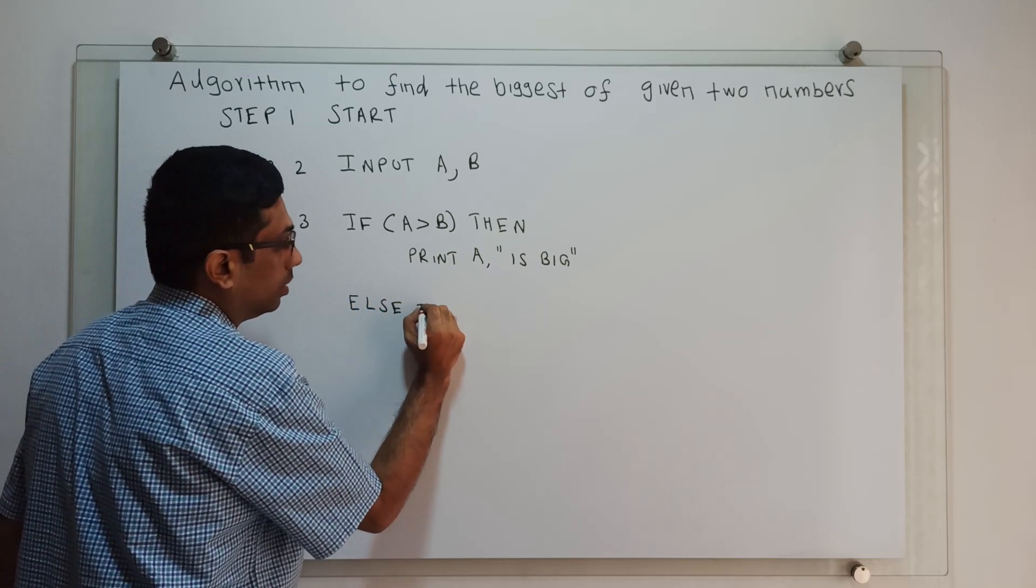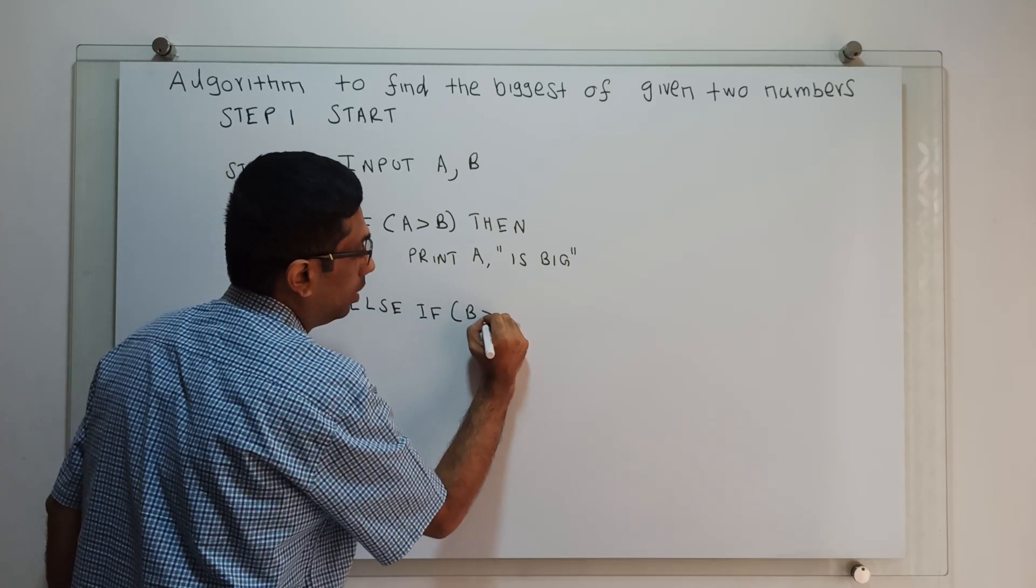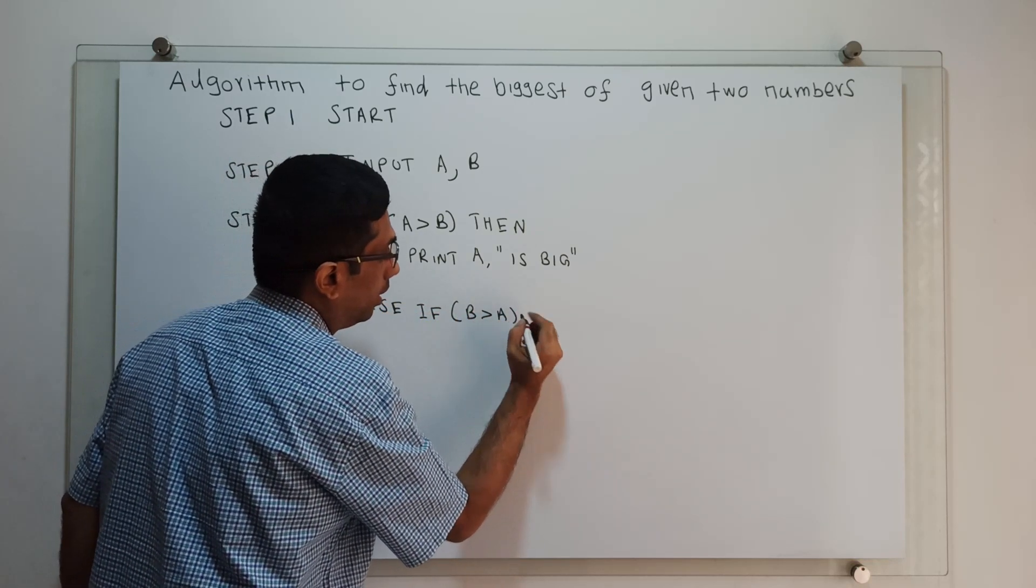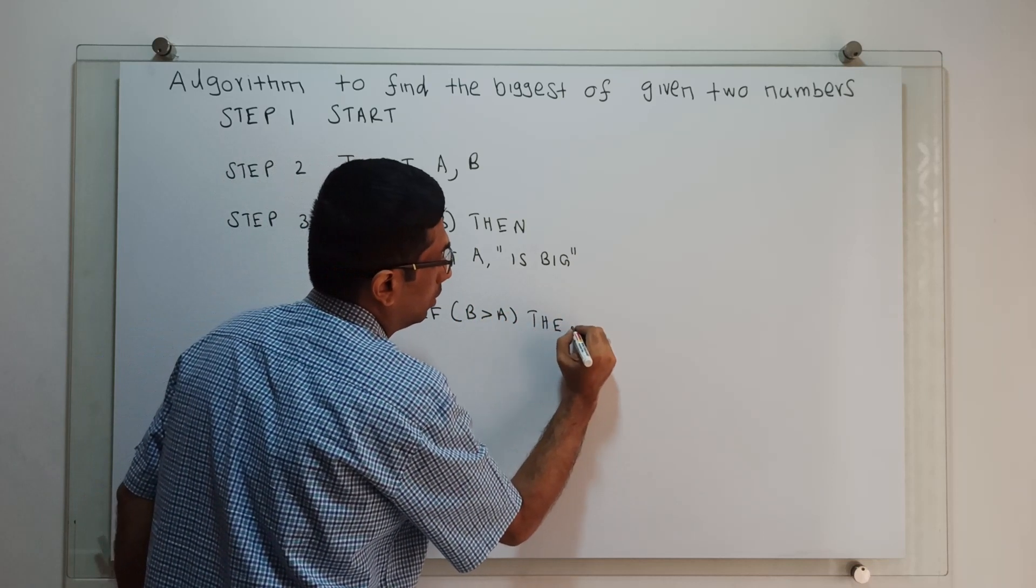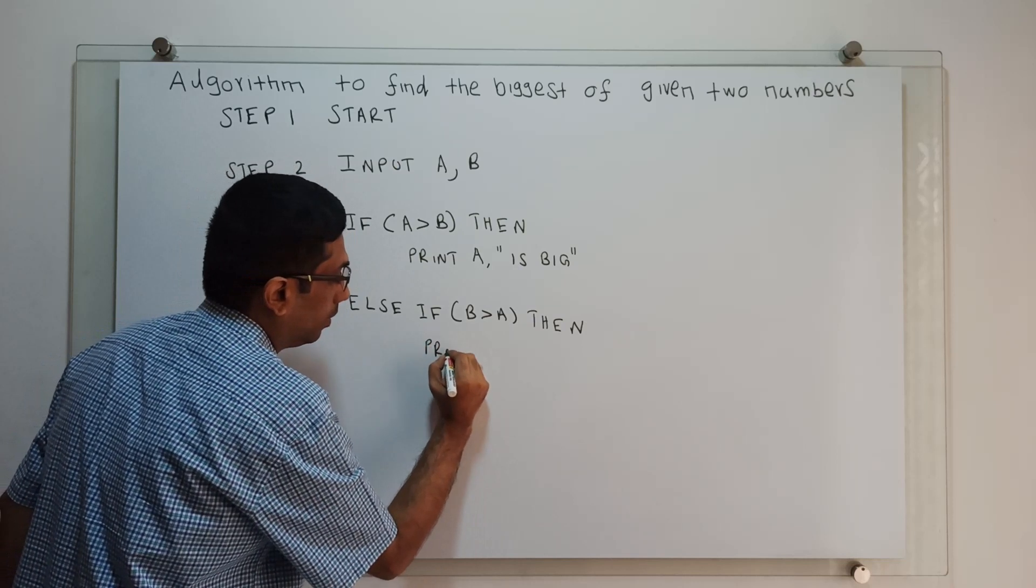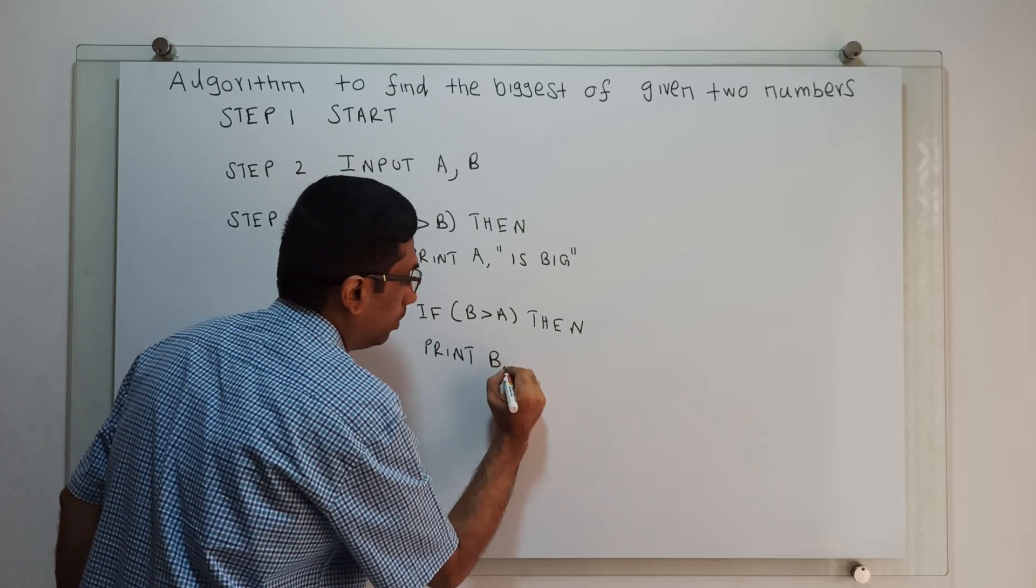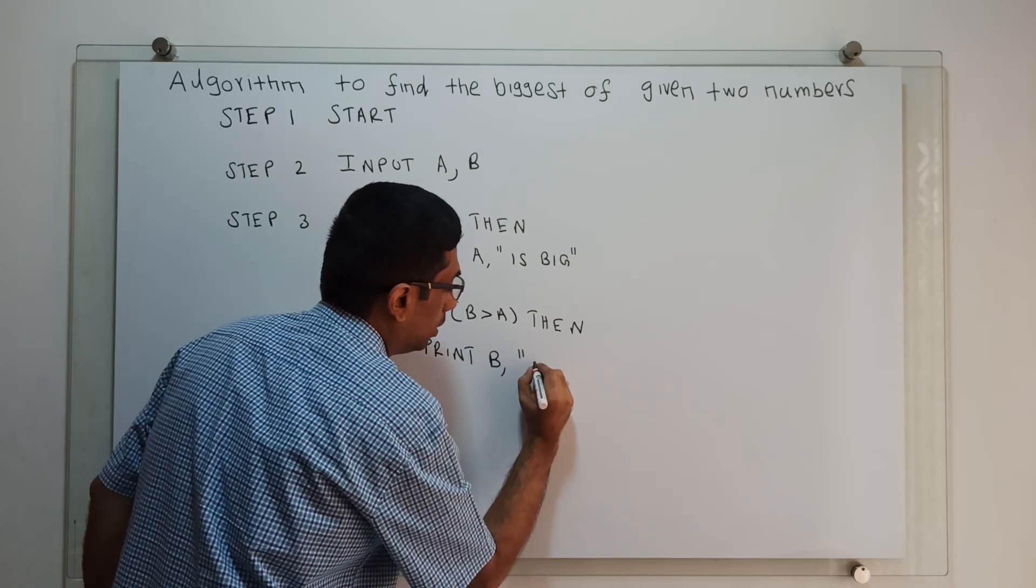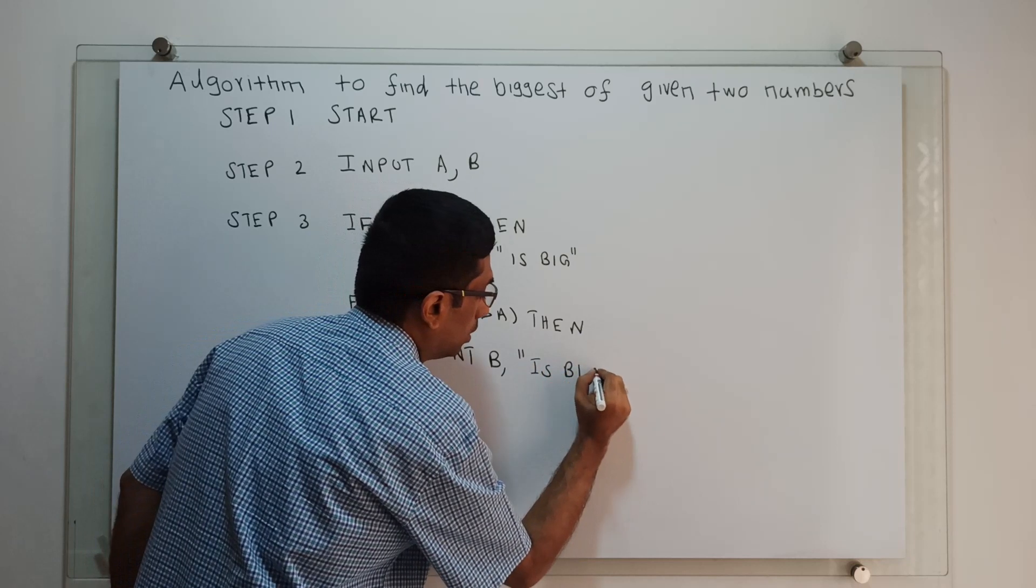Else if B greater than A, then print 'B is big'.